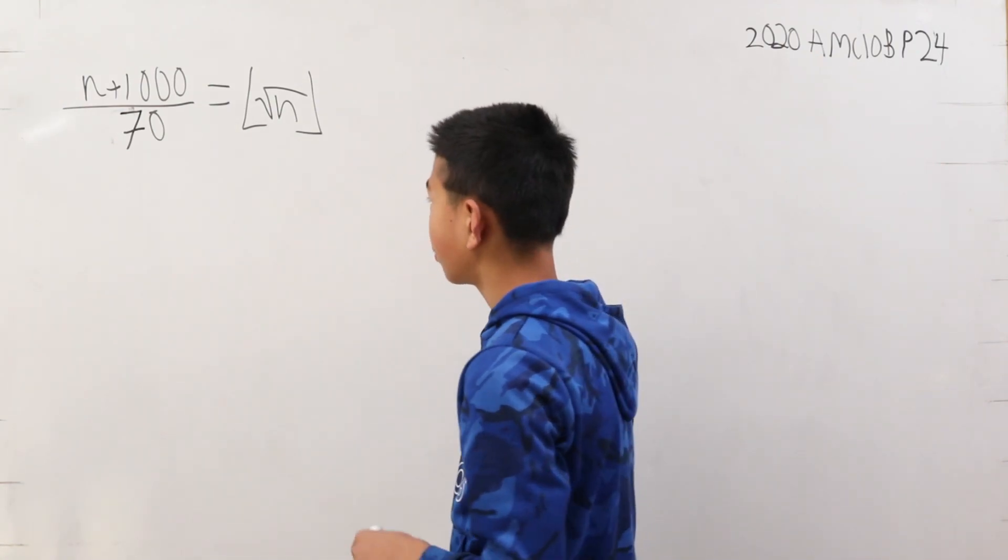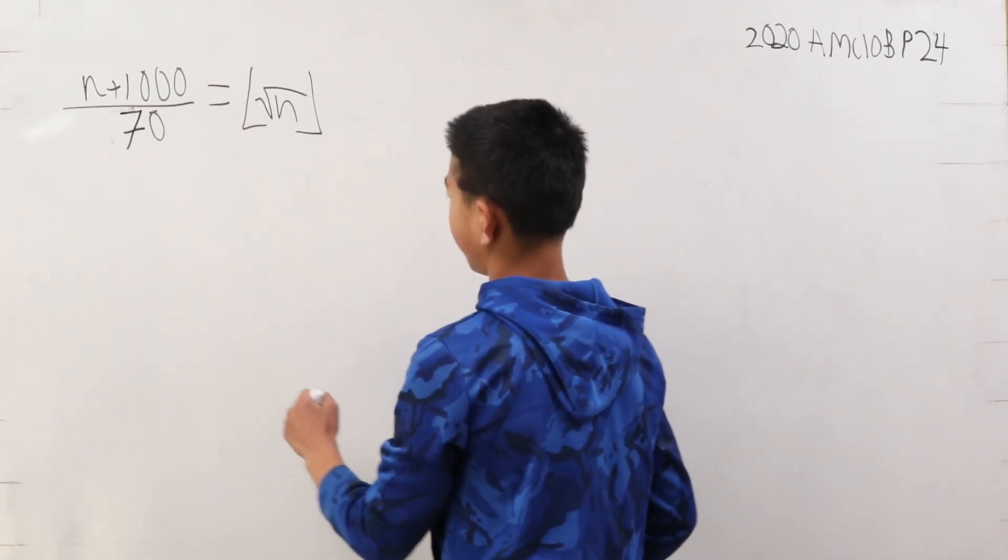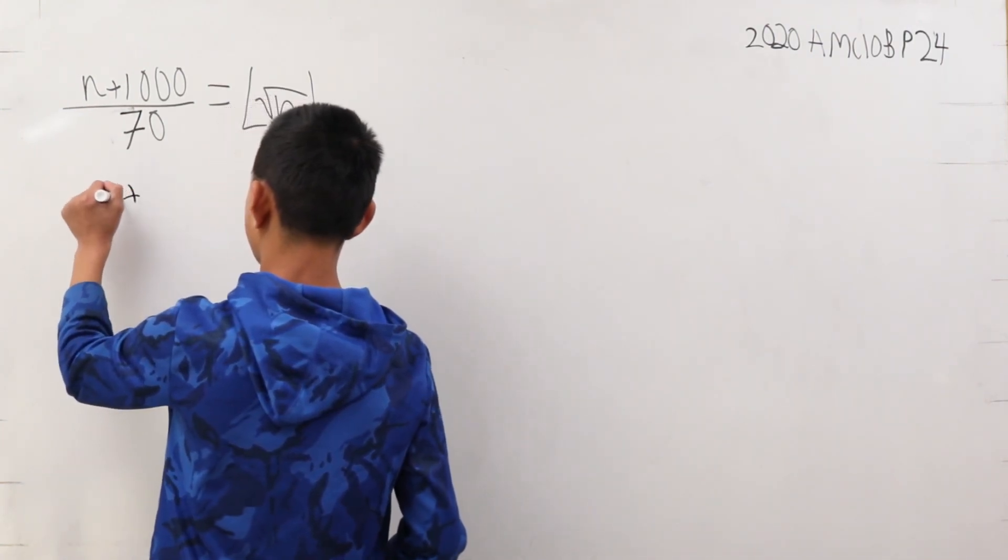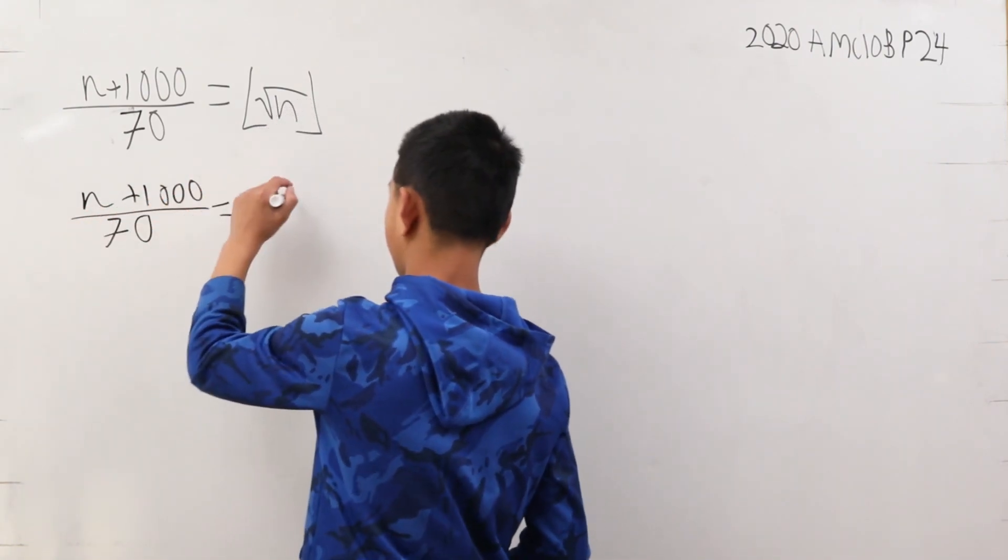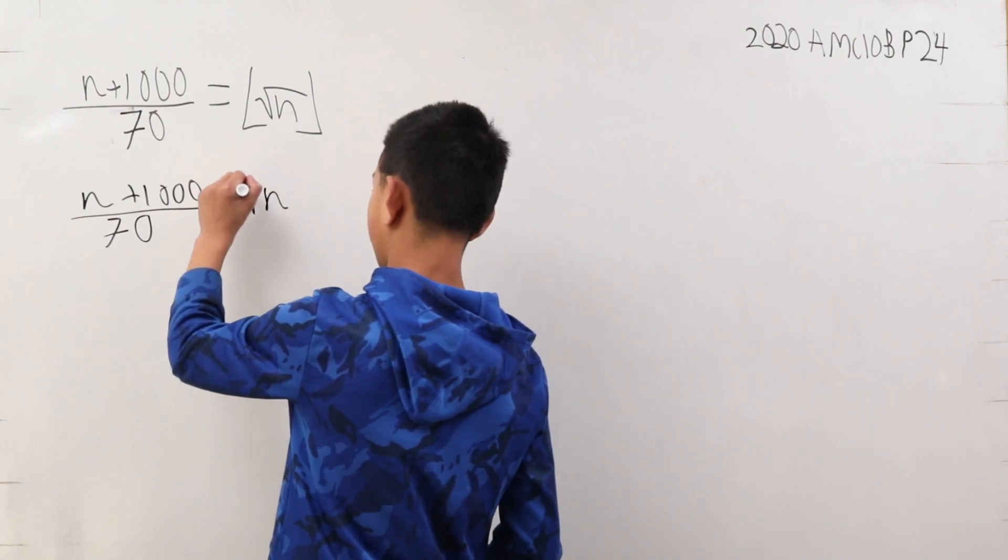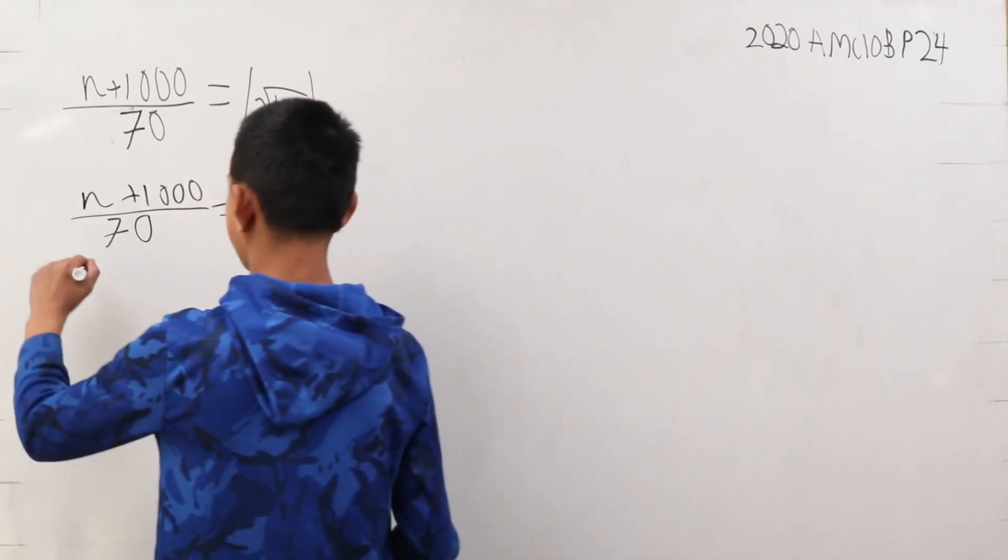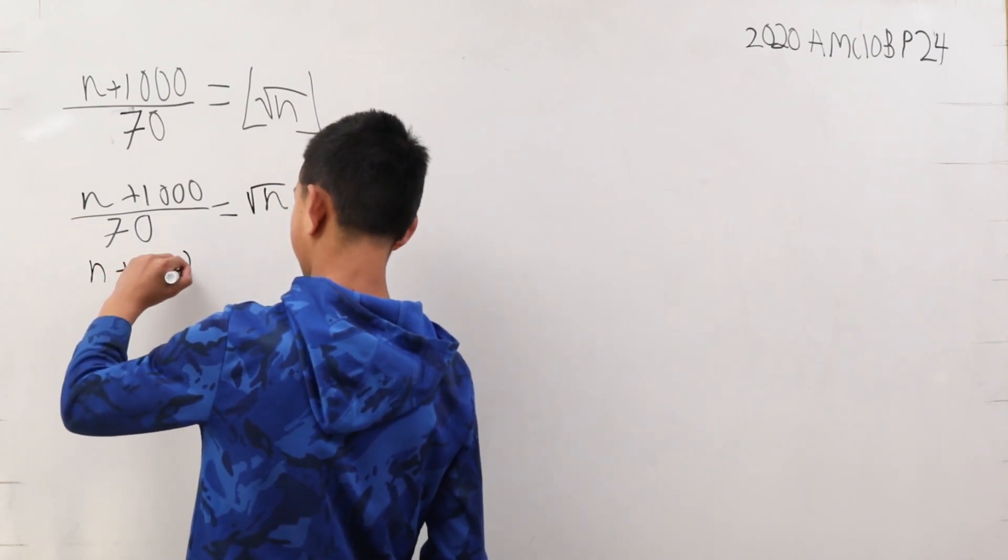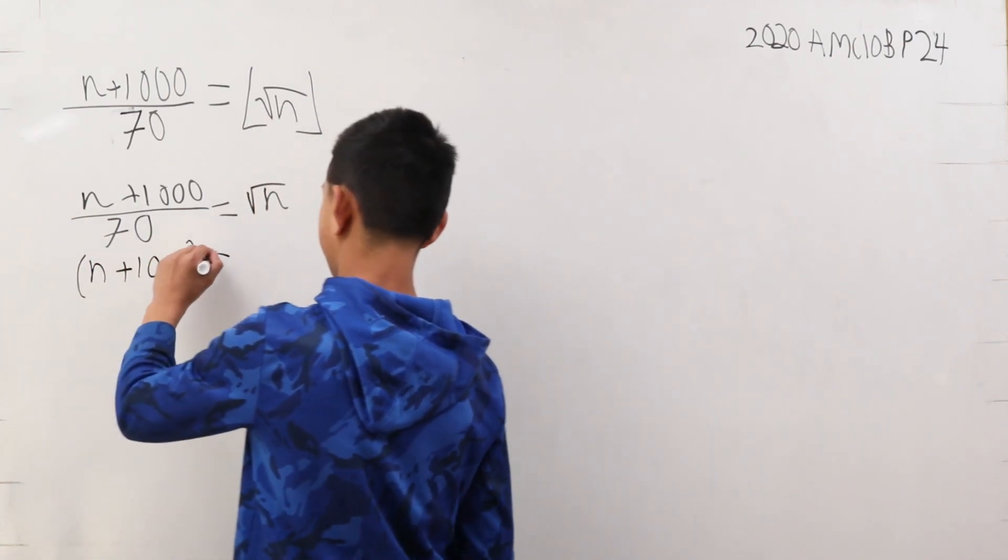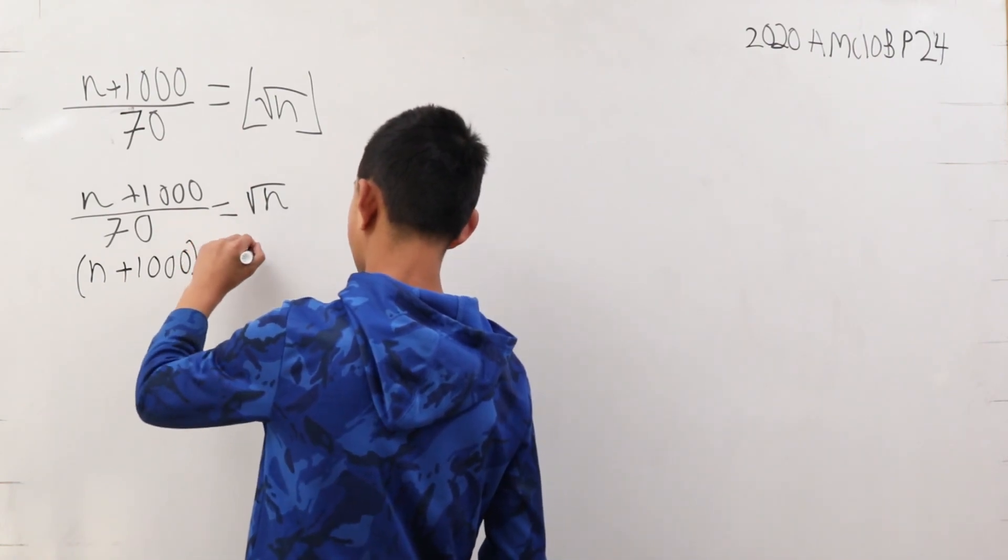Let's just first consider without the floor function. n plus 1,000 over 70 is equal to the square root of n. Now we can do n plus 1,000 is equal to 70 times the square root of n.